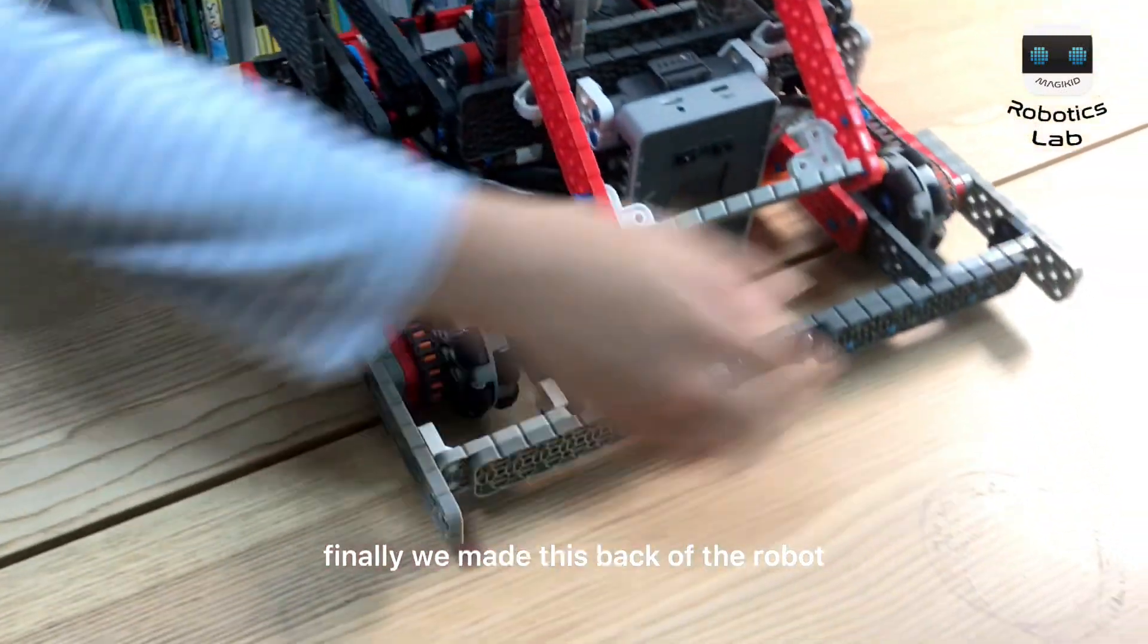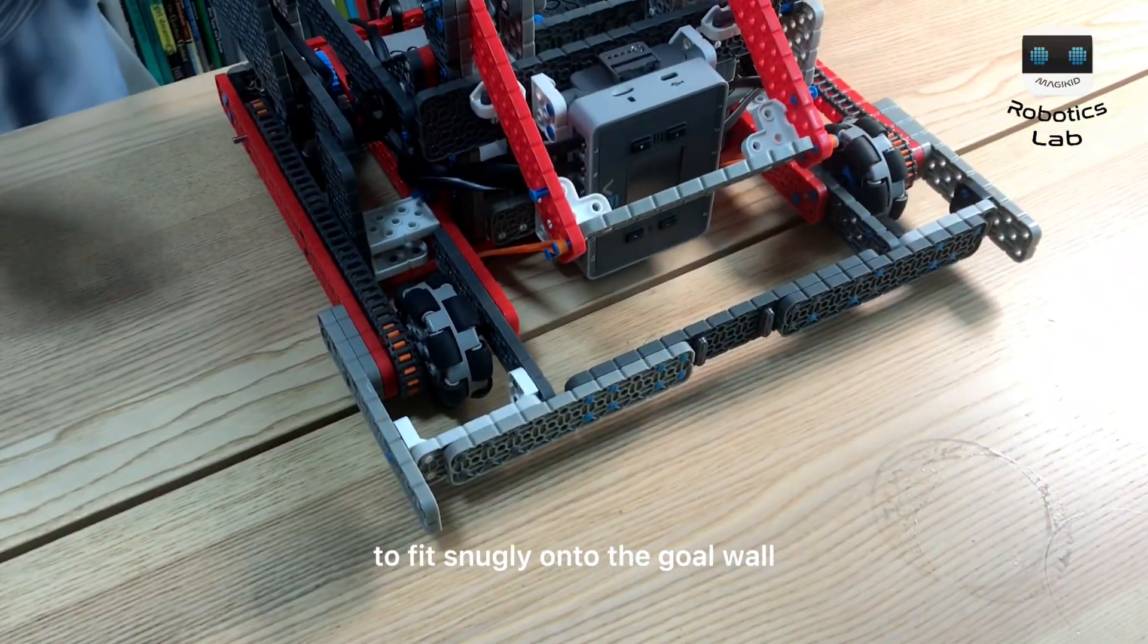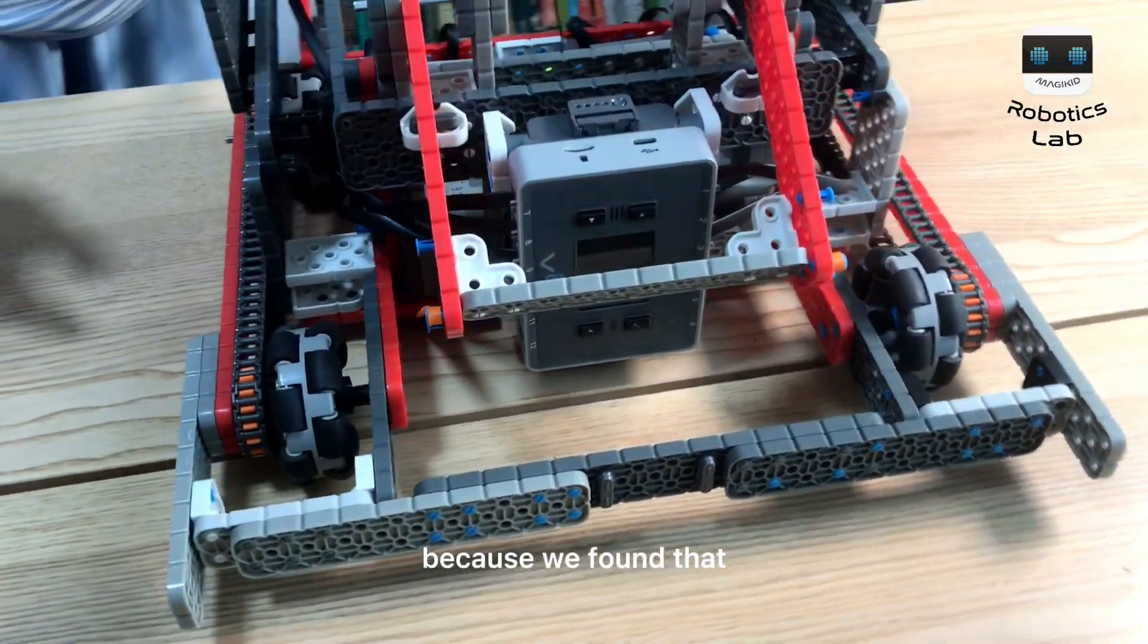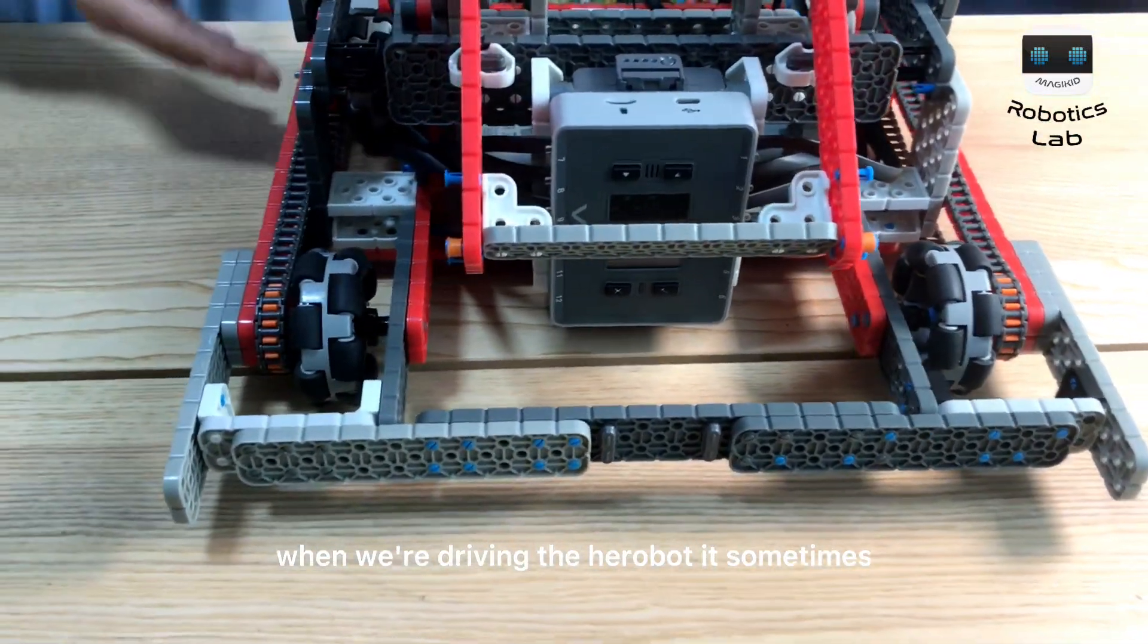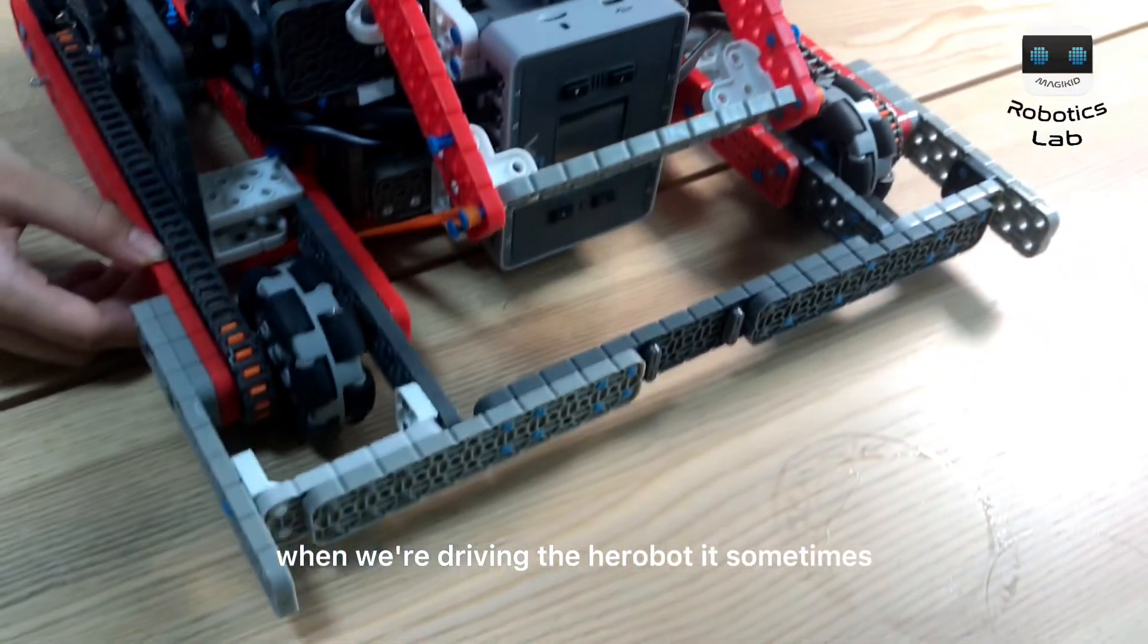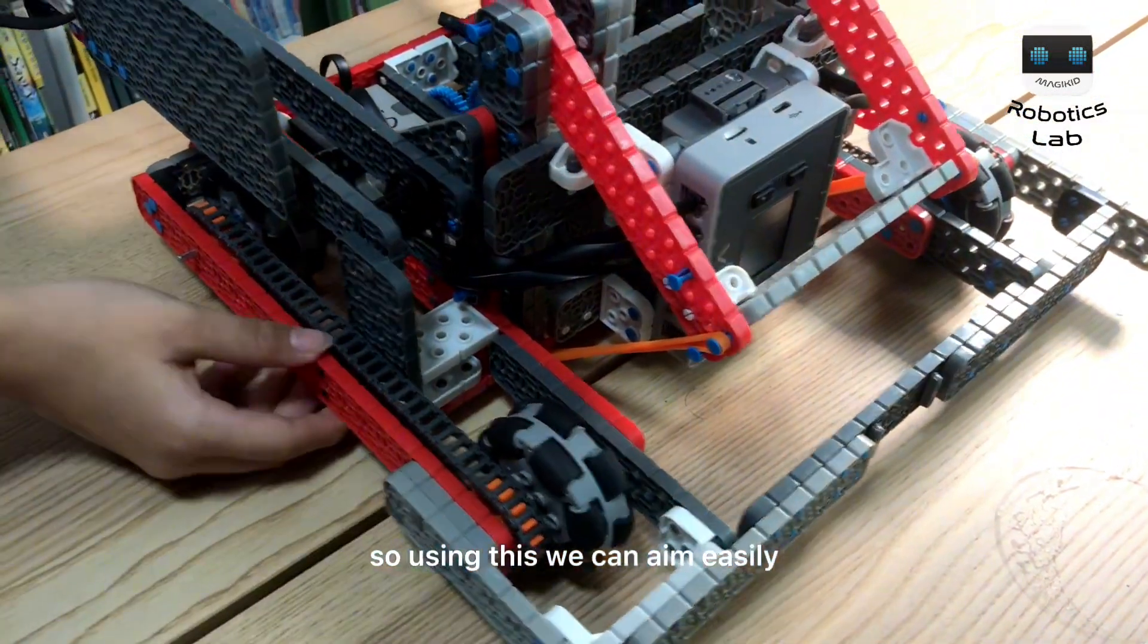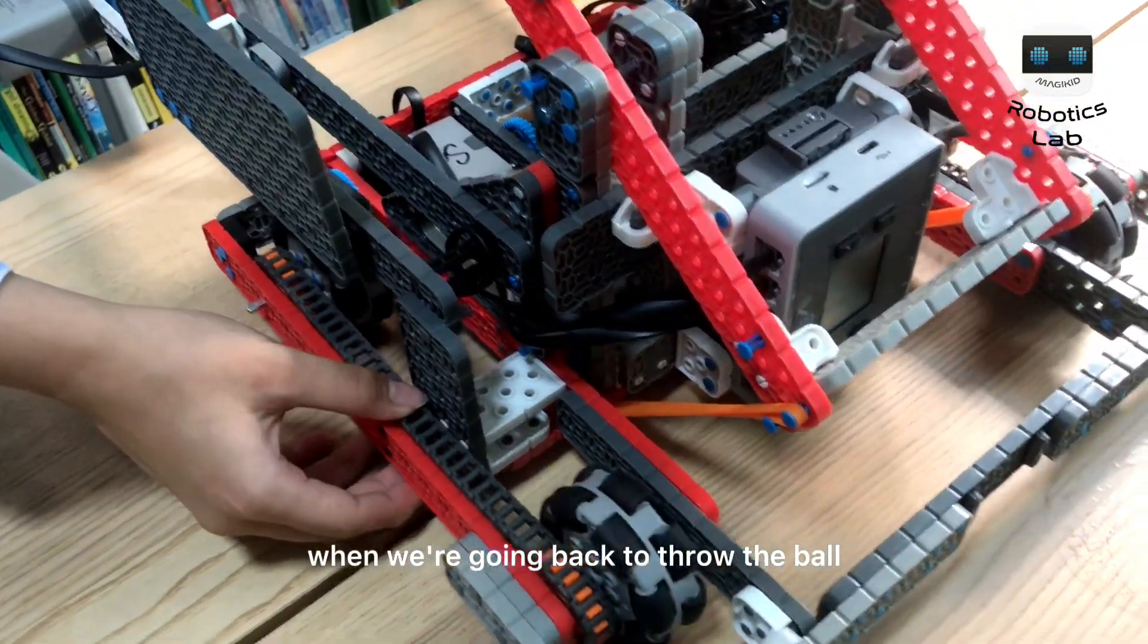Finally, we made the back of the robot to fit snugly onto the goal wall, because we found that when we were driving the Herobot, it sometimes is hard to aim. So, using this, we can aim easily when we are going back to throw the ball.